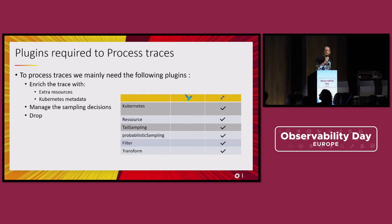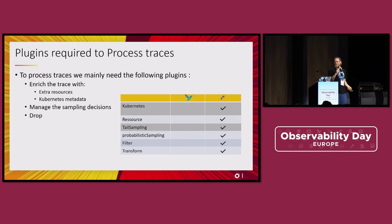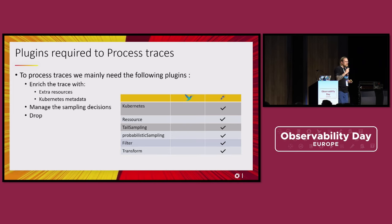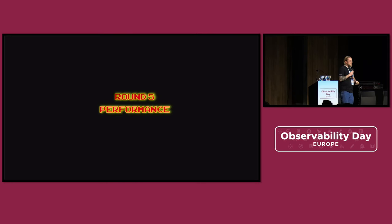When it comes to traces processing, you want to enrich traces, add metadata, drop traces, and do some sampling decisions. As expected, the Collector has everything, and FluentBit — like I said — is just a gateway or proxy: traces will come in and go out of FluentBit. So on traces, the Collector is clearly the winner.